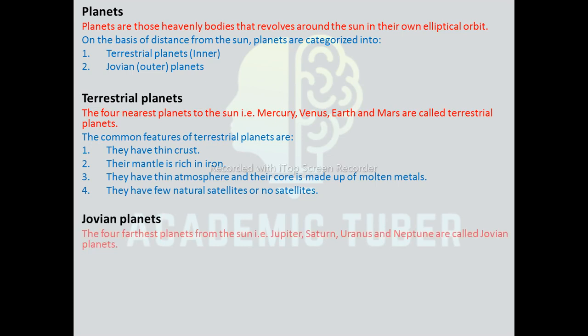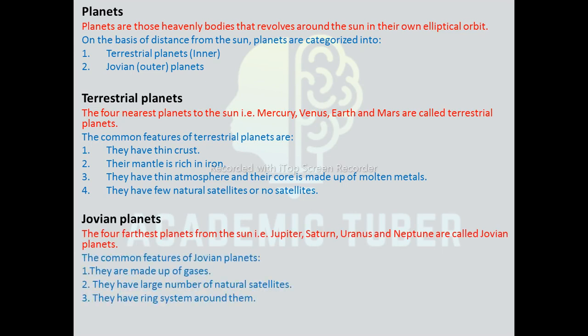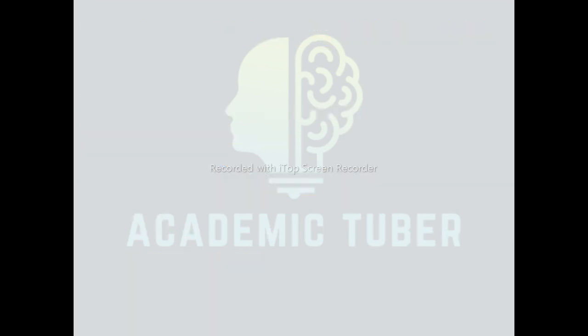Jovian planets: the four farthest planets from the Sun — Jupiter, Saturn, Uranus, and Neptune — are called Jovian planets. Those planets which lie outside the asteroid belt are known as Jovian or outer planets. Common features of these planets: they are made of gases, they have a large number of natural satellites, and they have a ring system around them.